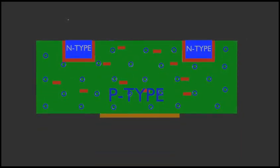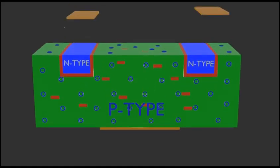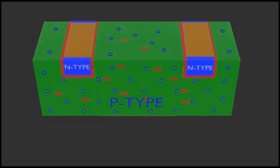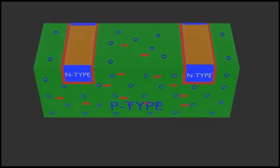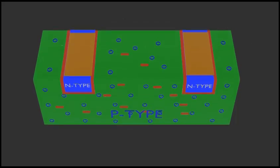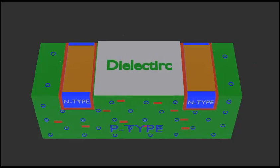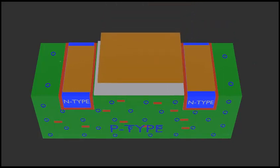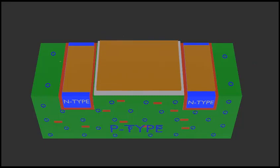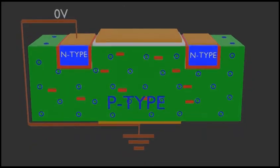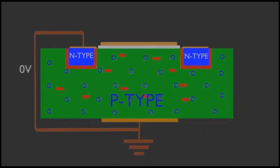This terminal is connected to the substrate or body, so it is called the substrate or body terminal. The other two terminals are called source and drain. There is no direct electrical connection between drain and source. Between these terminals we have a thin layer of dielectric material, and above this dielectric material another terminal is attached, called the gate terminal — so there are four terminals total.